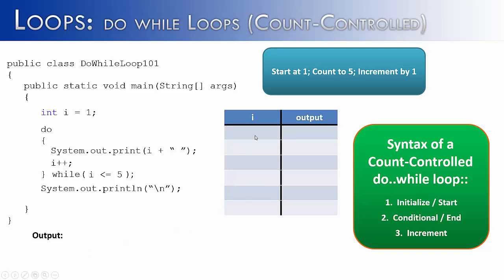Up here represents one iteration, or one trip through the loop. Down here shows in totality what it's printing out. We call this not just a do-while loop, but a count-controlled do-while loop, because it's being controlled by the number of times it runs — counting starting at 1, going to 5.